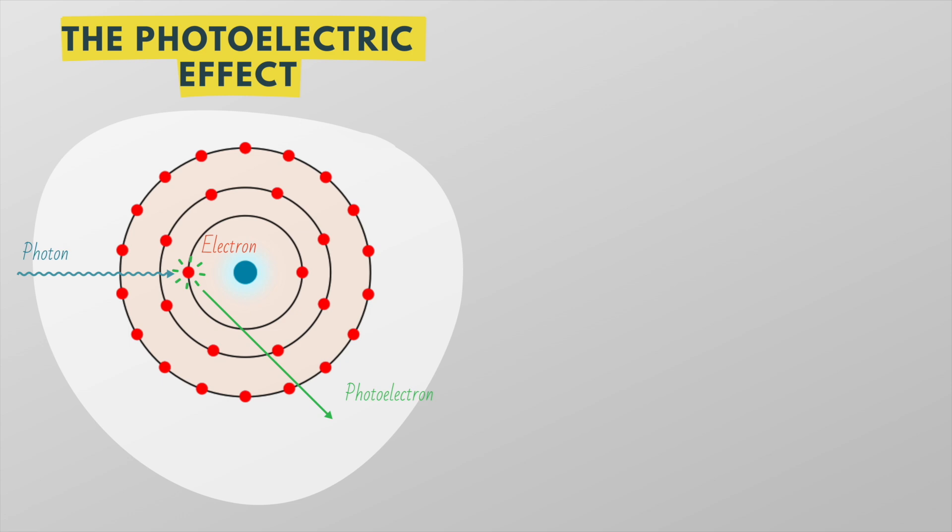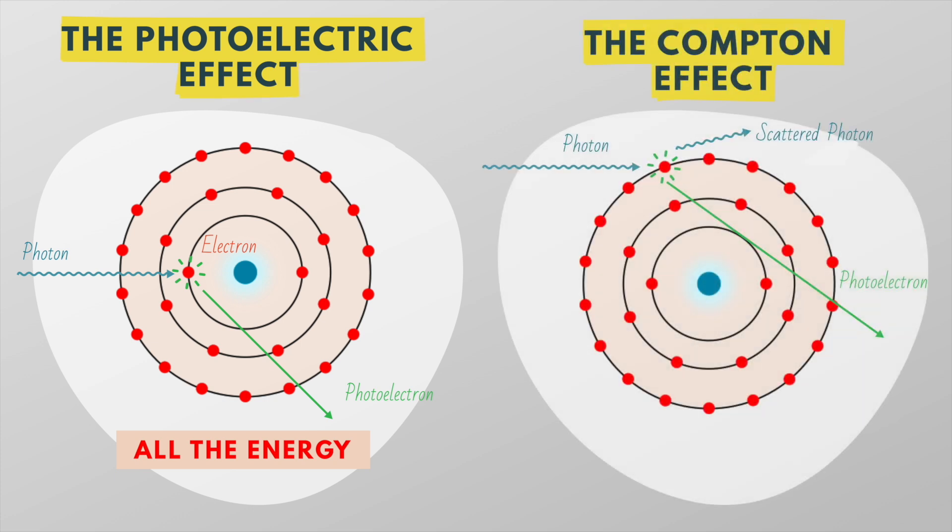So in the photoelectric effect, a single electron absorbs all the energy of an incident photon, while in the Compton effect, the incident photon only transfers a portion of its energy to an electron.